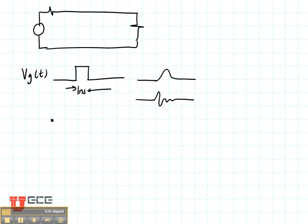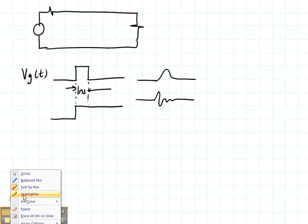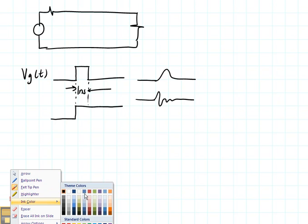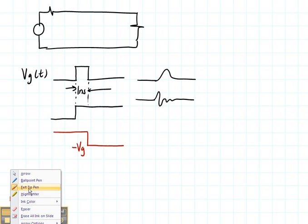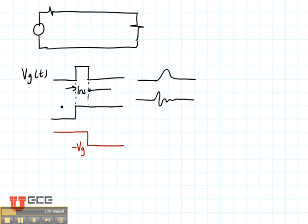We consider the rectangular pulse to be the sum of two pulses or two step functions. One of them is the step function that we were just working with, and the second one, let me get a different color to show you this one, is going to be one that's going down. So this is negative VG, whereas this one is positive VG, and they are separated by the width of the pulse, one nanosecond.